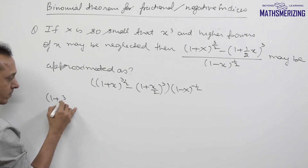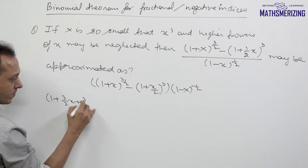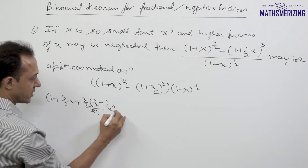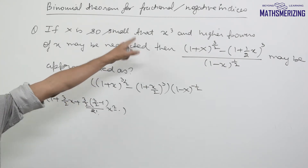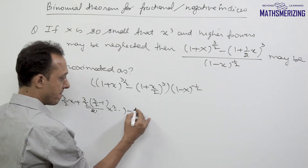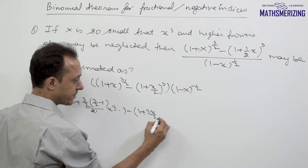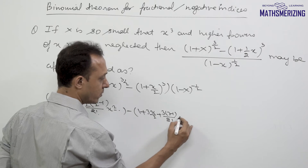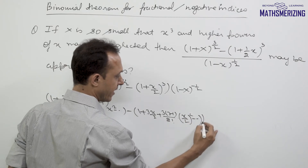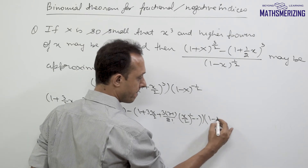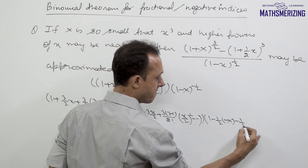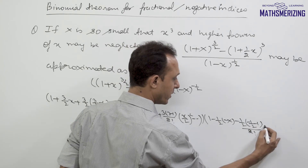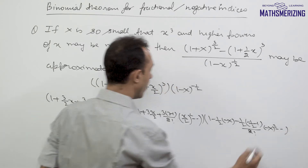I can write each factor using the binomial expansion: 1 + nx + n(n-1)/2! · x², ignoring all powers x³ and greater. For the first factor, n = 3/2, giving 1 + (3/2)x + (3/2)(1/2)/2! · x². For the third factor, n = -1/2, giving 1 + (-1/2)(-x) + (-1/2 - 1)/2! · (-x)².